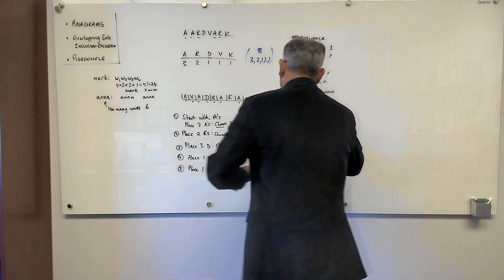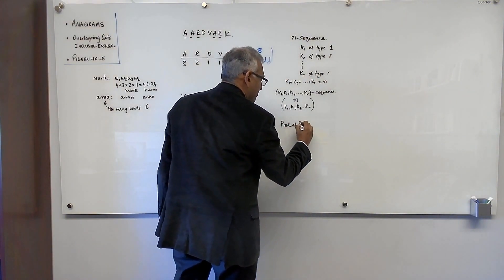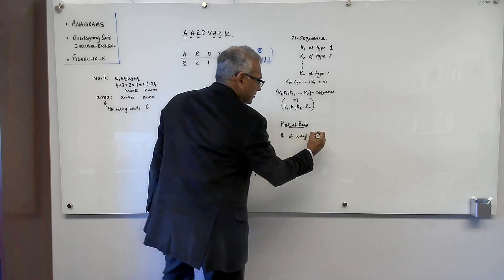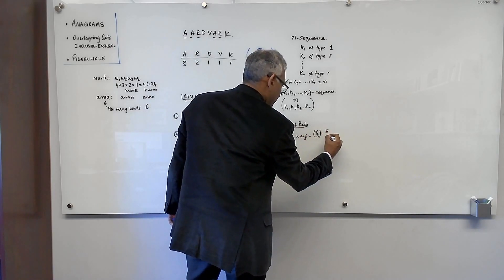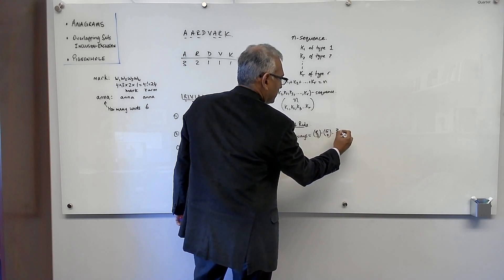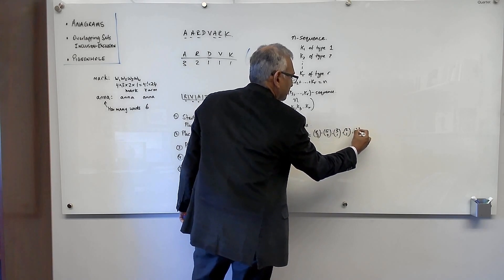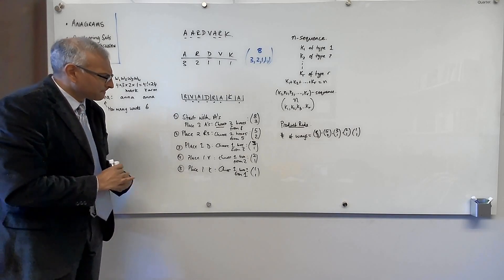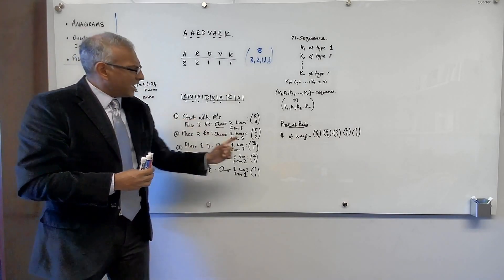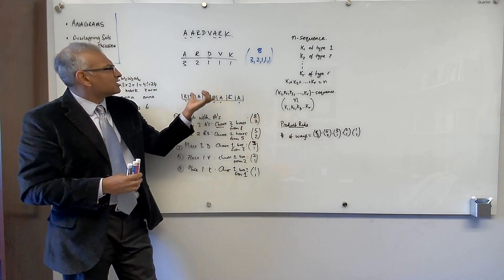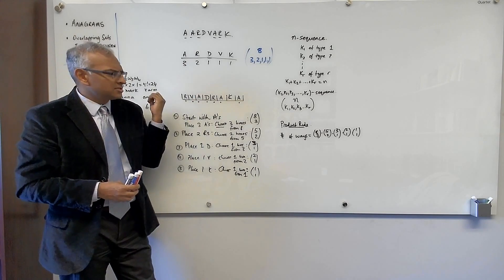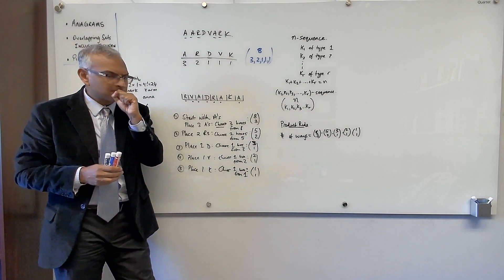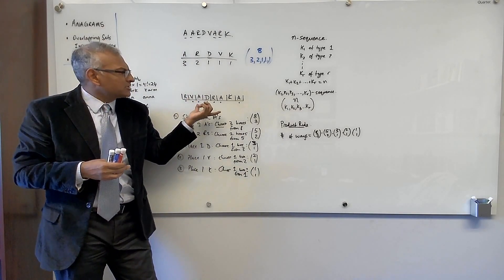By the product rule, the number of ways is: (8 choose 3) × (5 choose 2) × (3 choose 1) × (2 choose 1) × (1 choose 1). That's the number of anagrams of AARDVARK — the number of distinct arrangements of those letters. So we've solved the problem of counting sequences with repetition.